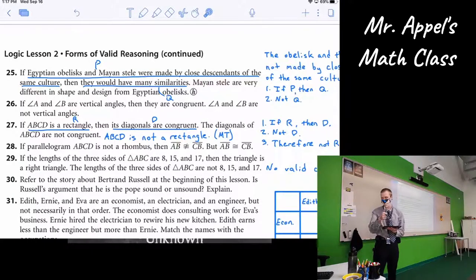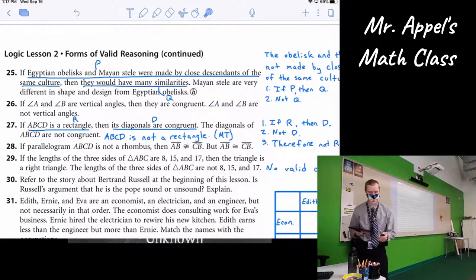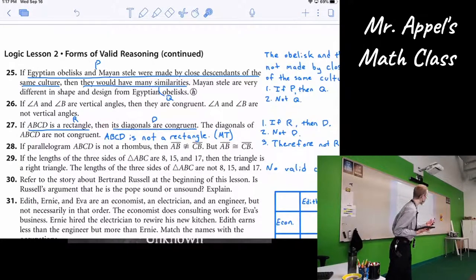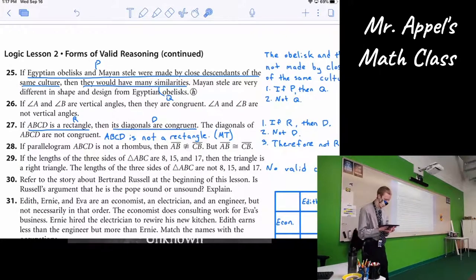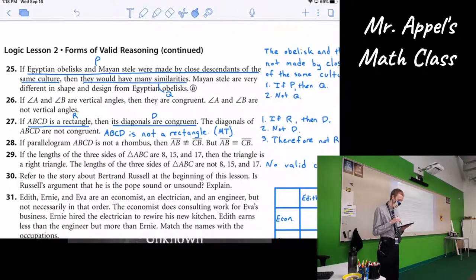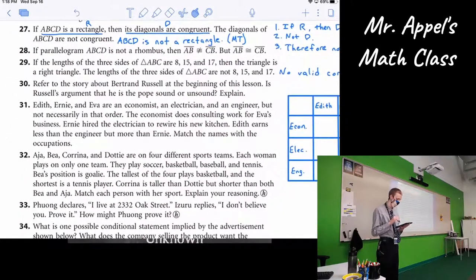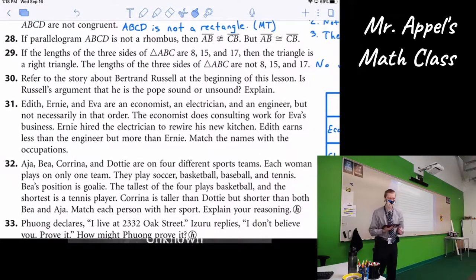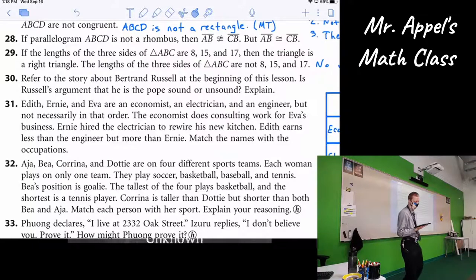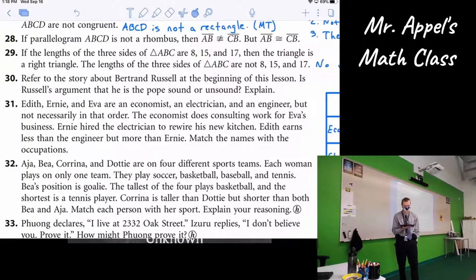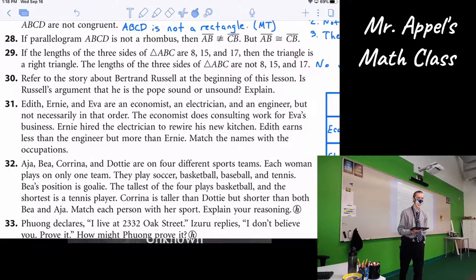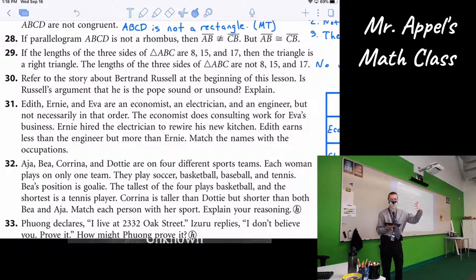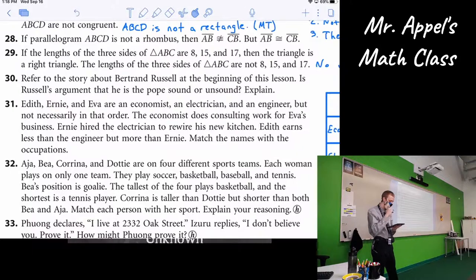In here? Good. Zoom. We're good to go. All right. Next question you had was 31. 31 is a fun one. Edith, Ernie, and Eva are an economist, an electrician, and an engineer. The author really loves his alliteration here, or rather, assonance, when you repeat a vowel sound over and over. But not necessarily in that order.